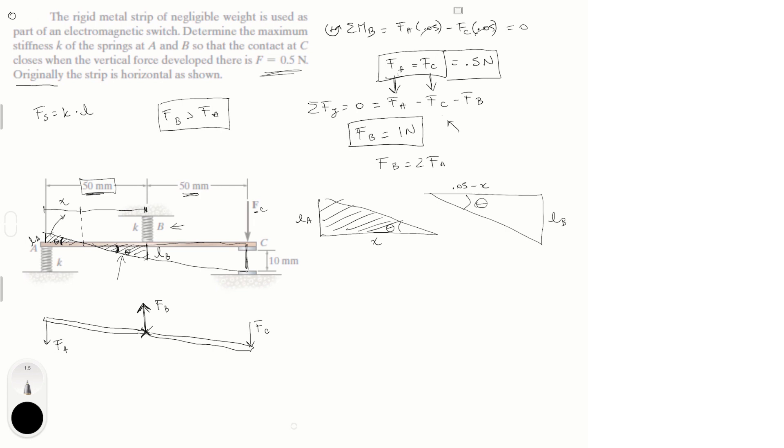And the length from here to here is equal to 50 millimeters or 0.05 minus X. And this is equal to LB. So these two triangles have the same angle. That's the observation that you have to make, which tells us that the ratio between this and this and the ratio between this and this are the same. That's what the angle basically is. So X over LA, which is that ratio, is equal to 0.05 minus X over LB.